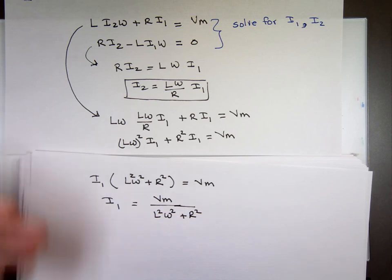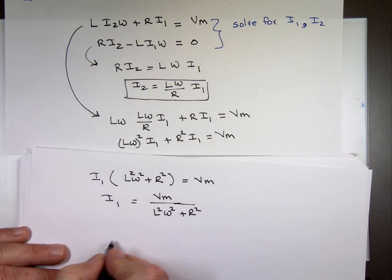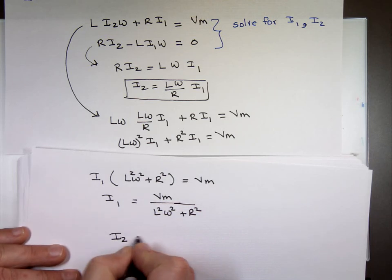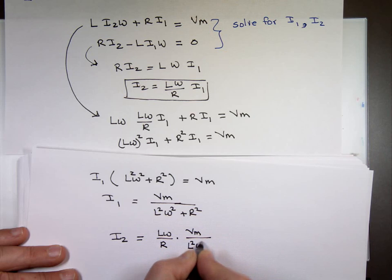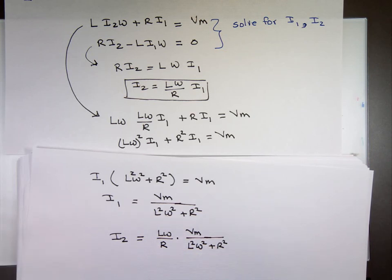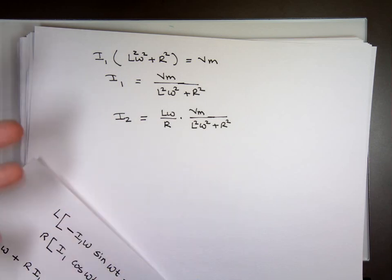If I know what I sub 1, can I find I sub 2? Absolutely. What is I sub 2? Lω over R times I sub 1, which is Vm over L squared ω squared plus R squared. So we managed to solve for I1, I2. That means we know what the current is. Now if we have numbers for these, if that was an example with numbers in it, I'm done.